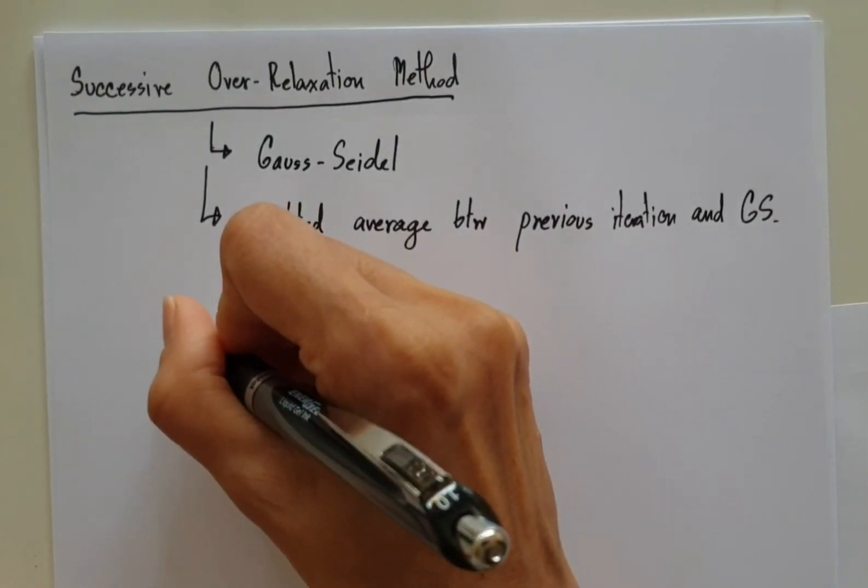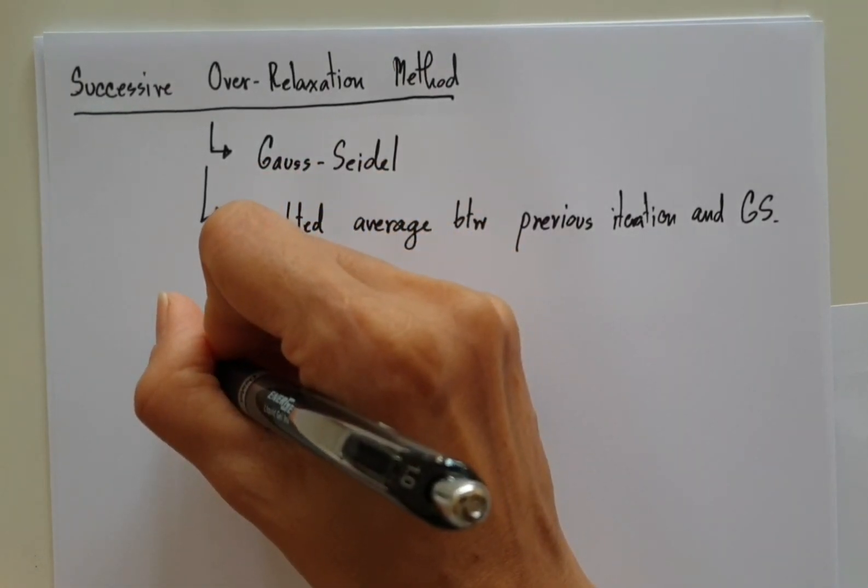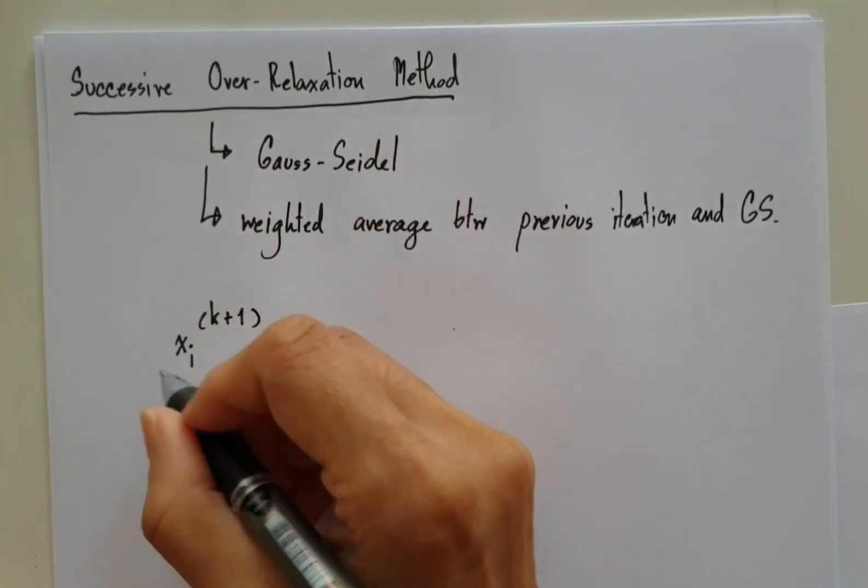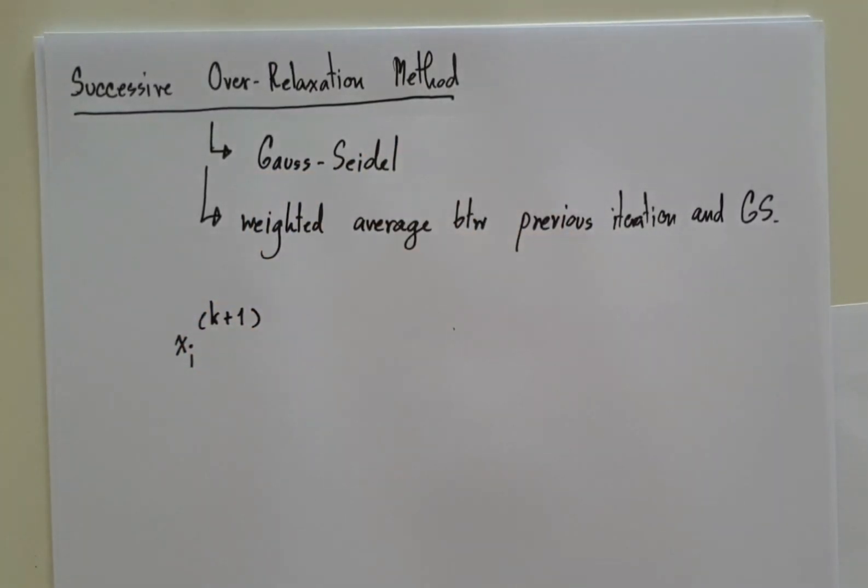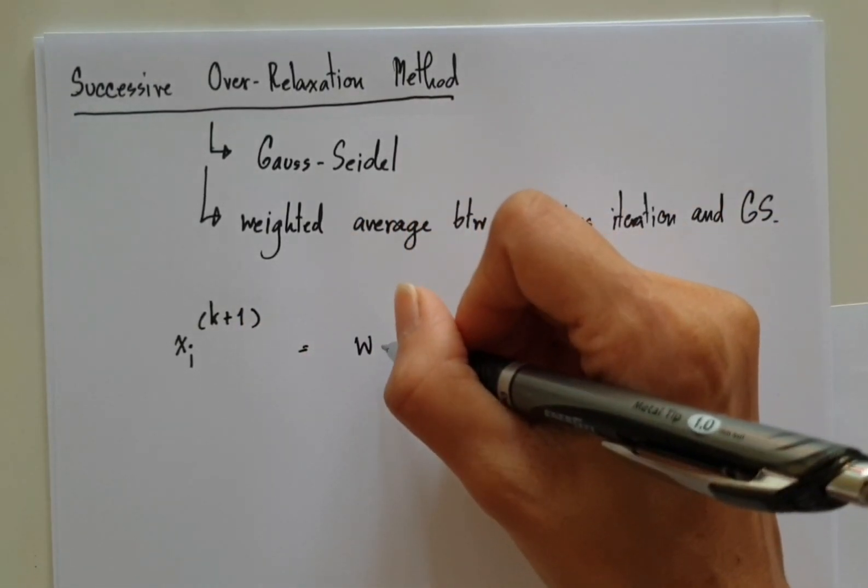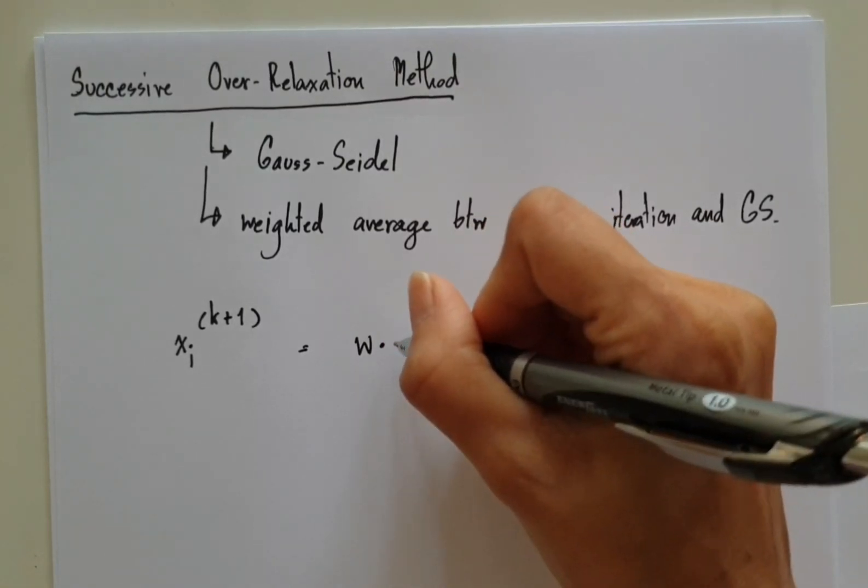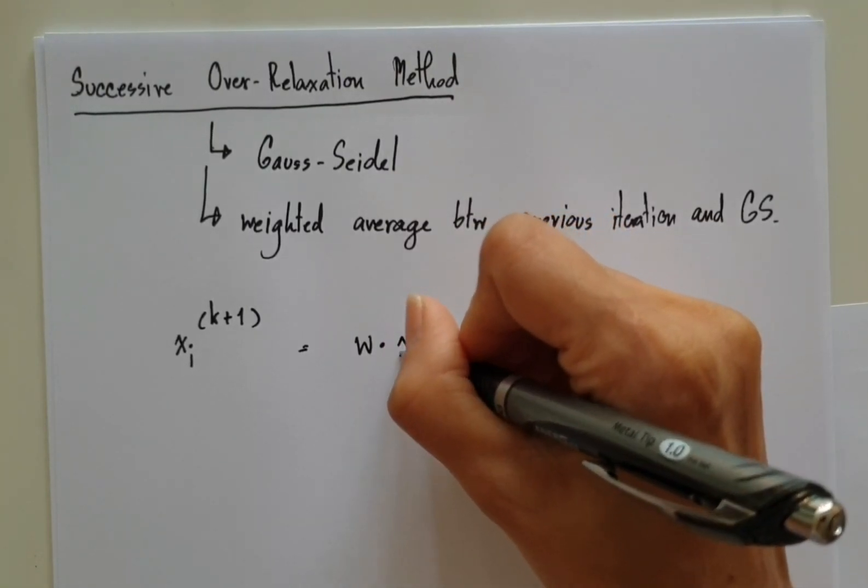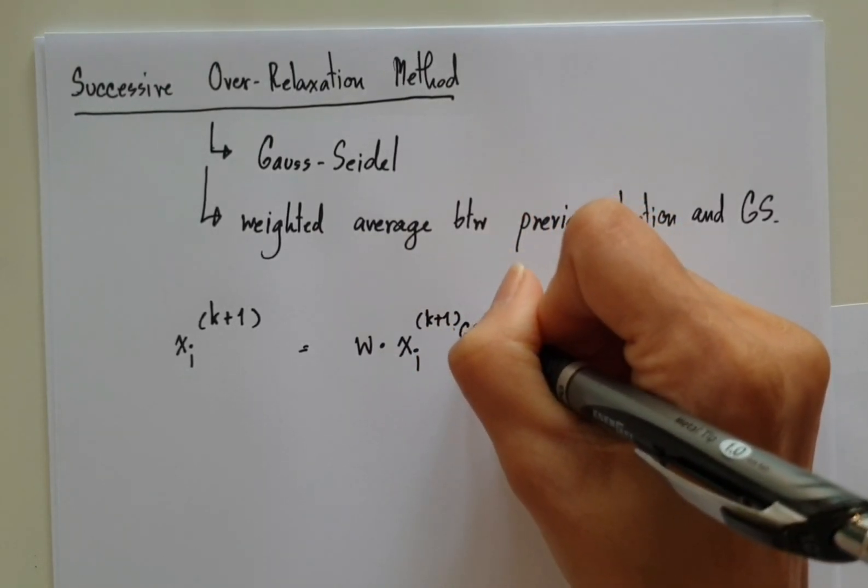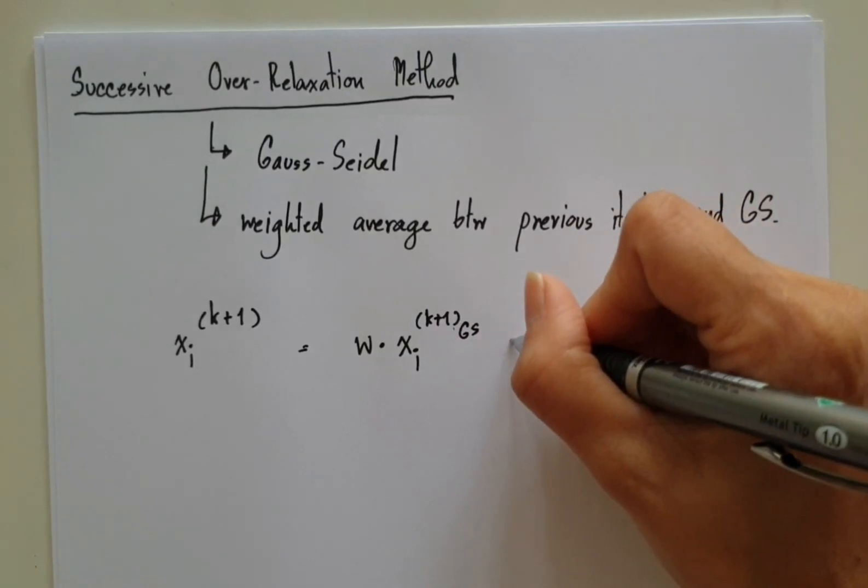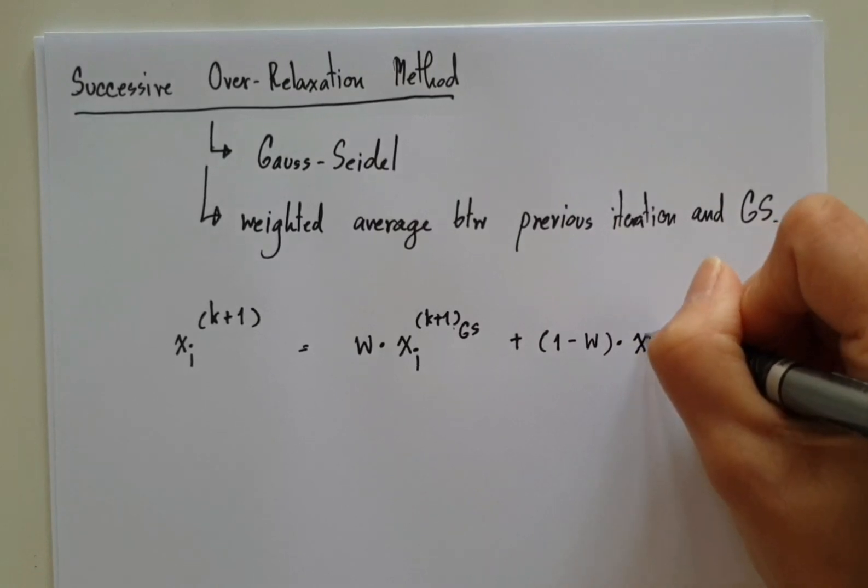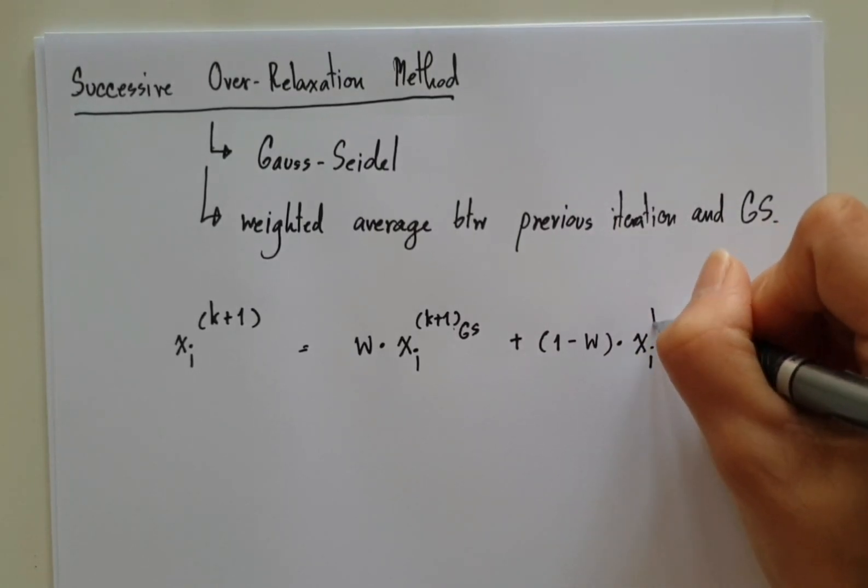So if we write the updating equation of x_k, which is x_i at k+1 iteration, it will compute from a weight that we will assign. And this weight times x_i from Gauss-Seidel, plus 1 minus weight times x_i at the previous iteration.